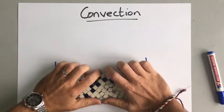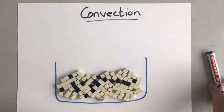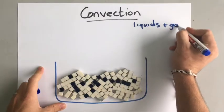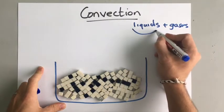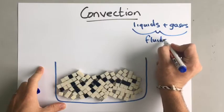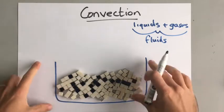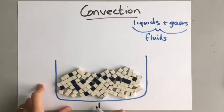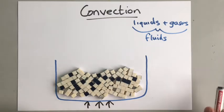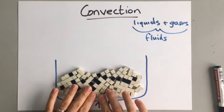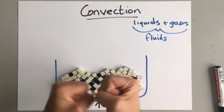Convection happens in liquids and gases. Together, we call liquids and gases fluids. In fluids, particles can move around past each other. If we have a pan of water and we start to heat it from the bottom, the particles at the bottom are going to gain more energy. When they gain more energy, they're going to move apart from each other — hot things expand.